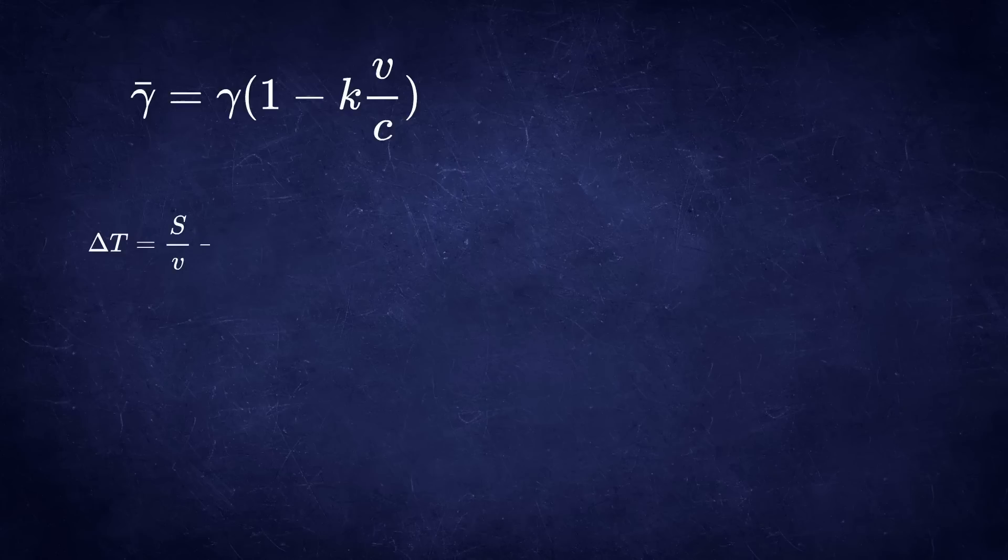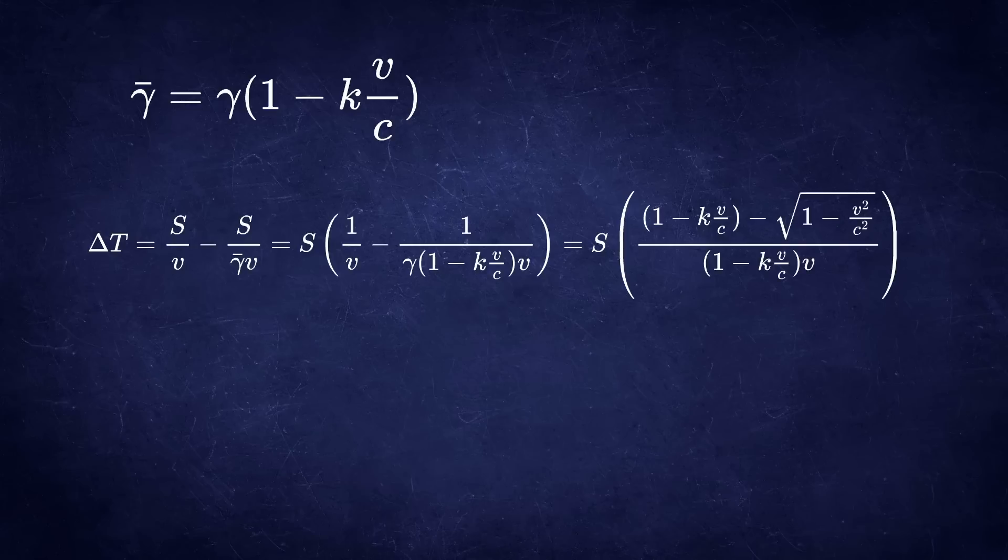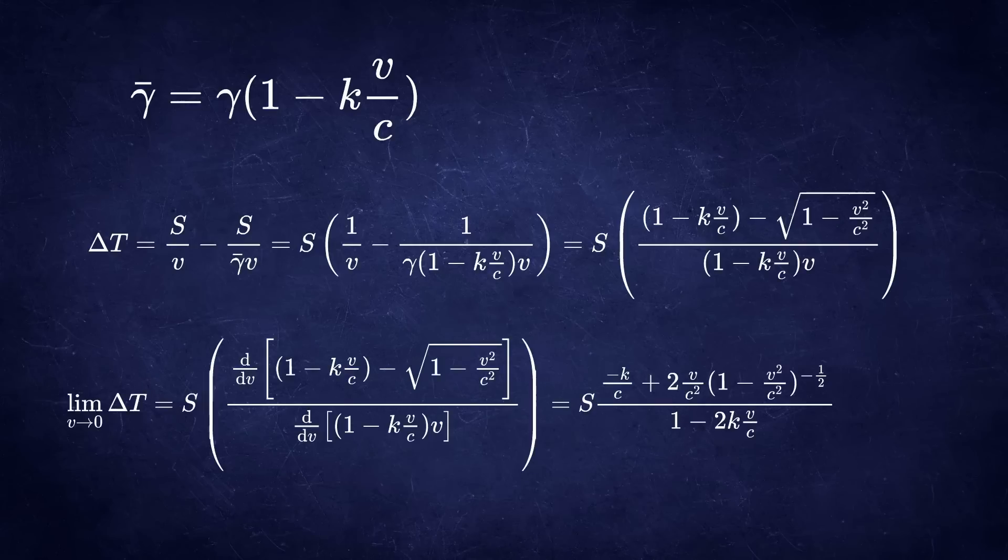So we can do the same trick now. We calculate the time difference with this new gamma factor. And we calculate the limit as the velocity goes to zero by the same method as we did in the previous case. And the result we get is this.